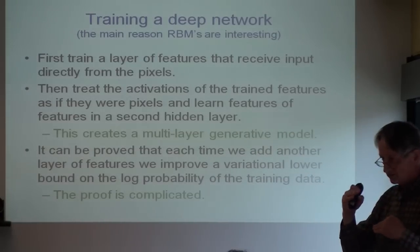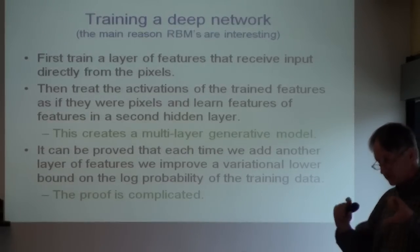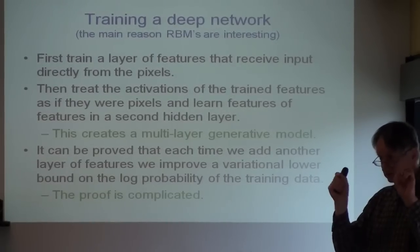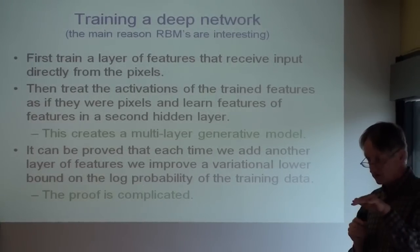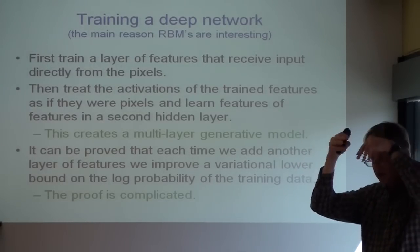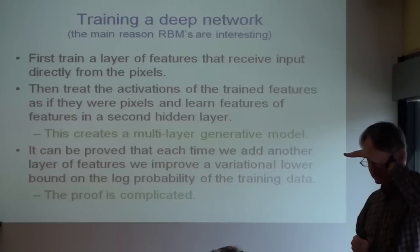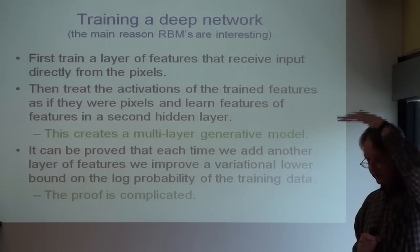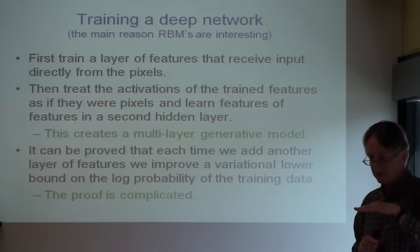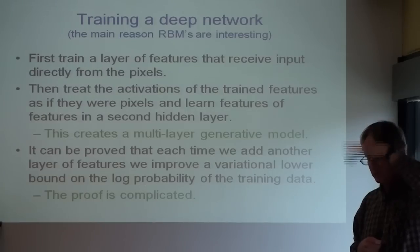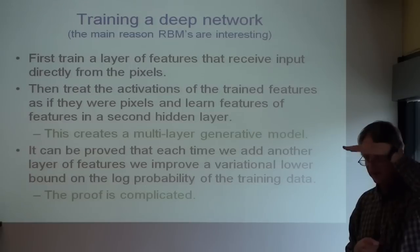The main reason these modules are interesting is you can stack them up. It works very well to train a module, then take the activities of the feature detectors, treat them as though they were data, and train another module on top of that. So the first module is trying to model what's going on in the pixels by using these feature detectors, and the feature detectors will tend to be highly correlated. The second model is trying to model the correlations among feature detectors. You can guarantee that every time you go up a level, you get a better model of the data — actually you can guarantee that the first time. For further levels, all you can guarantee is that there's a bound on how good your model is, and every time you add another level, that bound improves. Having got this guarantee, we then violate all the conditions of the mathematics and just add more levels in a sort of ad hoc way, because we know good things are going to happen, and then we justify it by the fact that good things do happen.